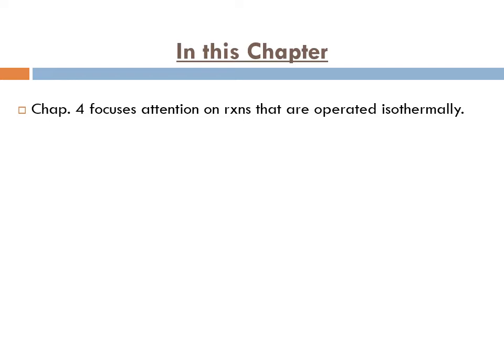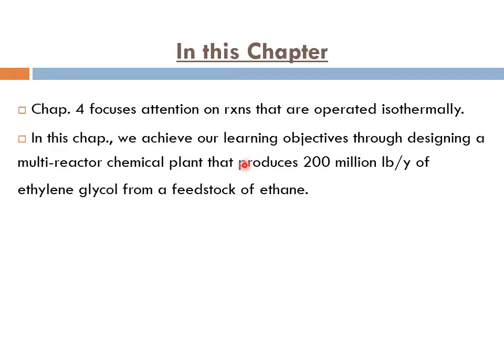Again, in chapter 4, we're going to focus our attention on reactions and reactors that are operated isothermally as opposed to the design of non-isothermal reactors, which we're going to discuss in chapter 8. In this chapter, we achieve our learning objectives through designing a multiple reactor chemical plant that produces 200 million pounds per year of ethylene glycol from a feedstock of ethane.